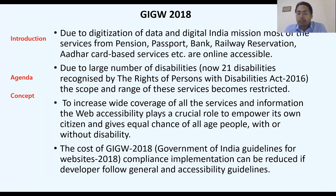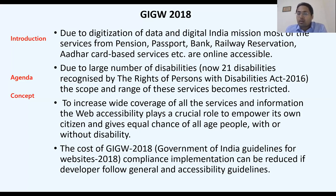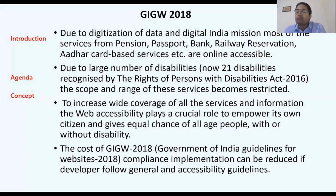What happens is that most people are unable to access these services. The reasons are disabilities — motor disabilities, eyesight problems, or other kinds of disabilities. Children below 8 or 10 years are also unable to access them, as are elderly people above 65, who face the same kinds of problems.